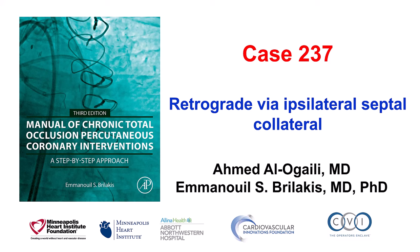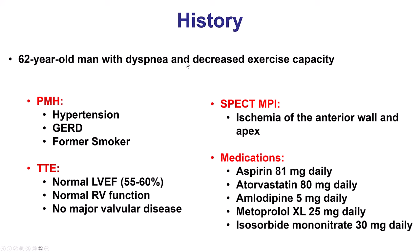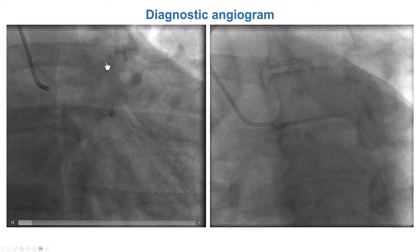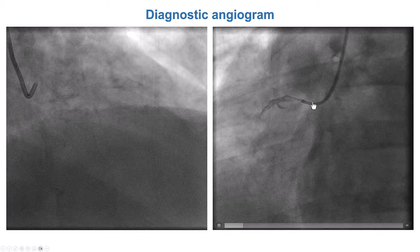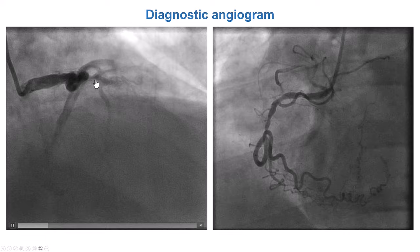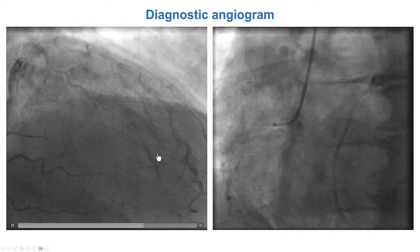This is a case of retrograde crossing of an LAD CTO using an ipsilateral septal collateral. The patient was a gentleman who presented with progressive dyspnea, an anginal equivalent, had normal left ventricular function, ischemia in the anterior wall, and coronary angiography showed heavy calcification and occlusion of the middle LAD with a blunt proximal cap very close to a septal branch. There were collaterals from the right coronary artery, an epicardial collateral coming close to the distal cap, and also some ipsilateral collaterals — a large septal giving a septal-to-septal ipsilateral connection filling the LAD close to the distal cap.